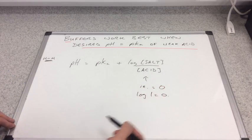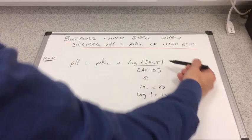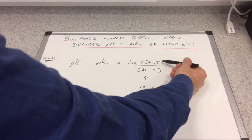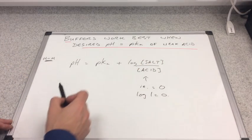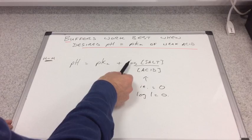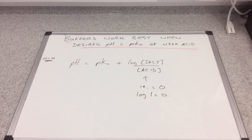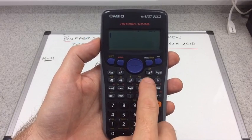How are we going to get one here? Well we need to make the salt concentration equal to the acid concentration. If salt equals acid concentration, we get log of one here, and when we put that in the calculator, log one equals zero.